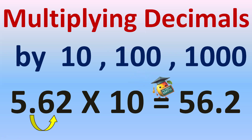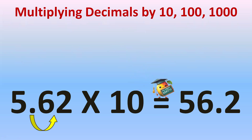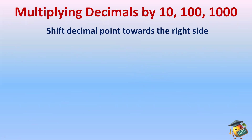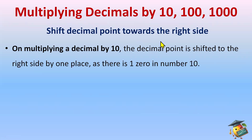How to multiply decimals by ten, hundred, thousand, and even ten thousand. When multiplying decimals by ten, hundred, or thousand, shift the decimal point towards the right side. On multiplying a decimal by ten, the decimal point is shifted to the right side by one place.